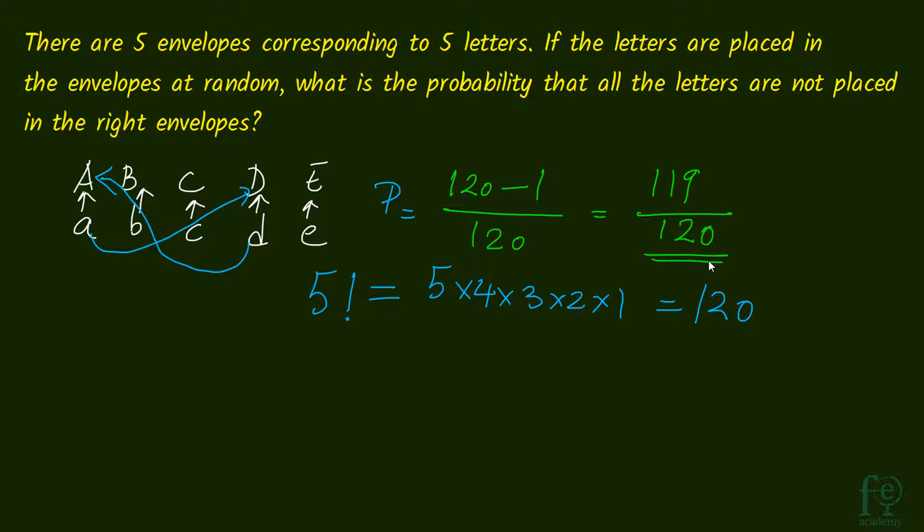So when this question comes, you have to understand: what is the probability that all the letters are not placed in the right envelopes? There is only 1 way in which all the letters can be placed in the right envelopes, so there will be 119 ways in which they are not. Therefore 119 divided by 120 is our required probability.